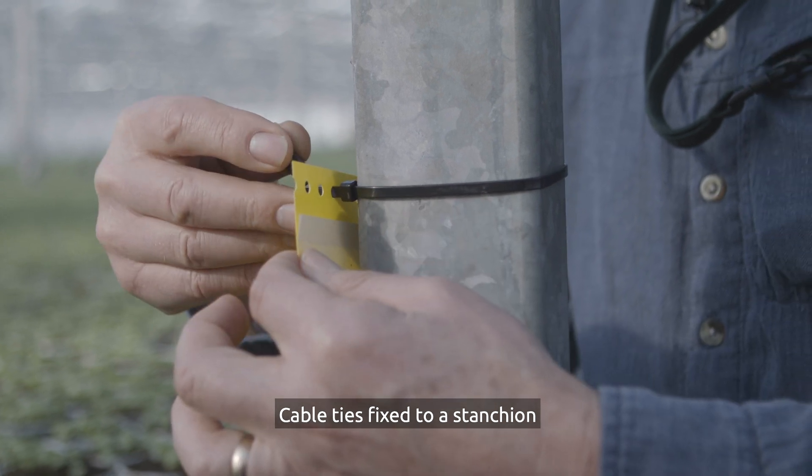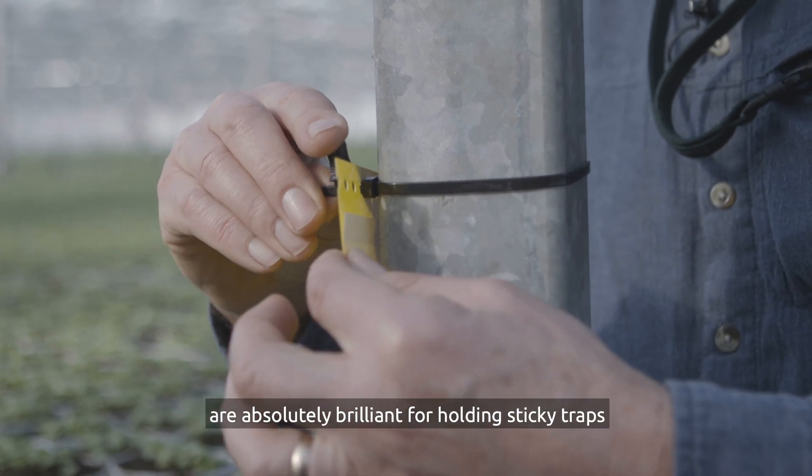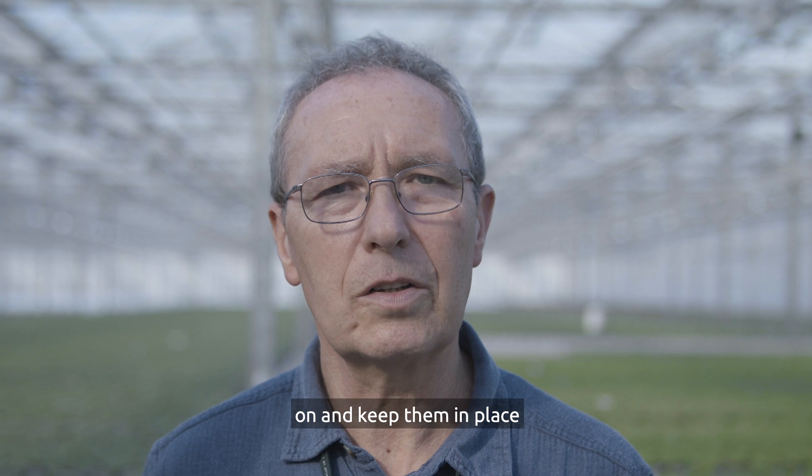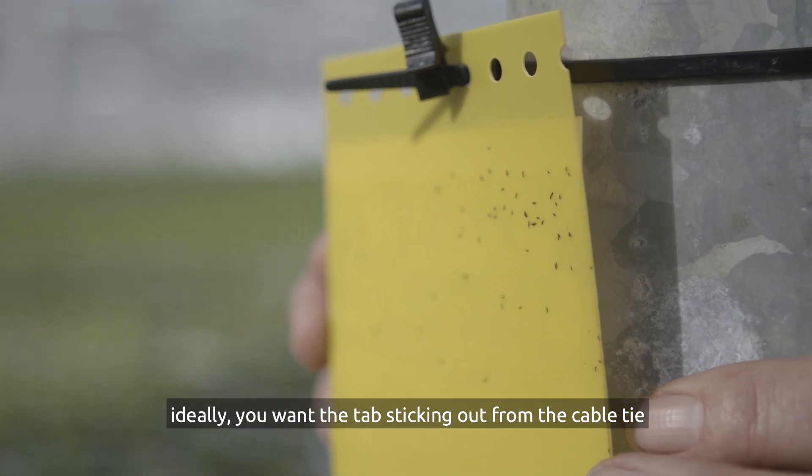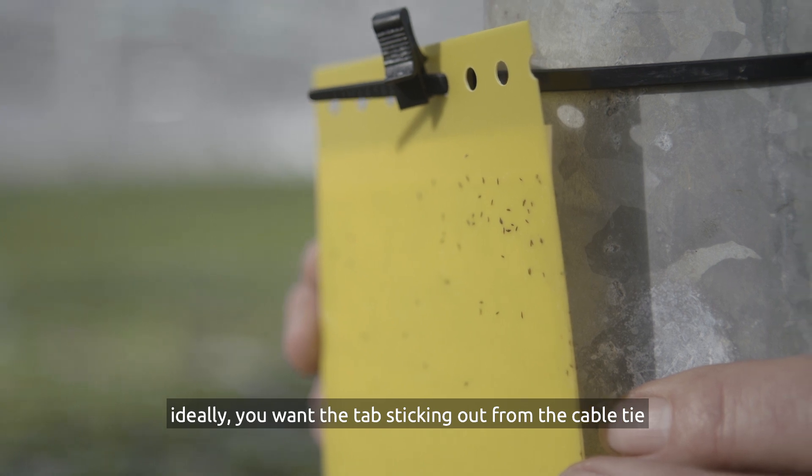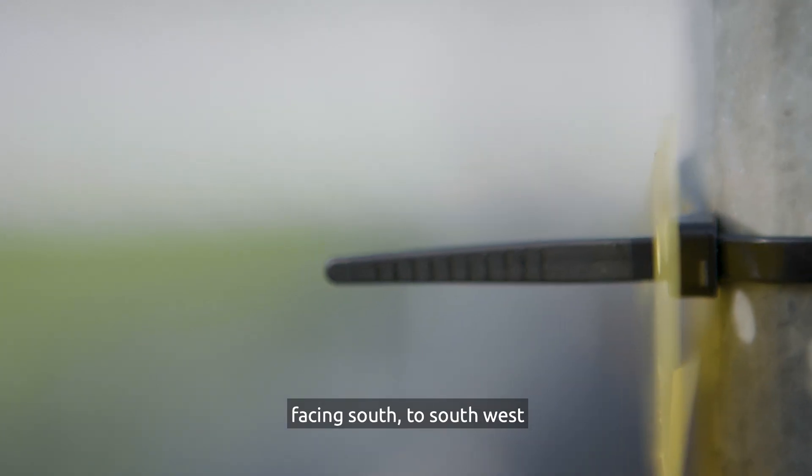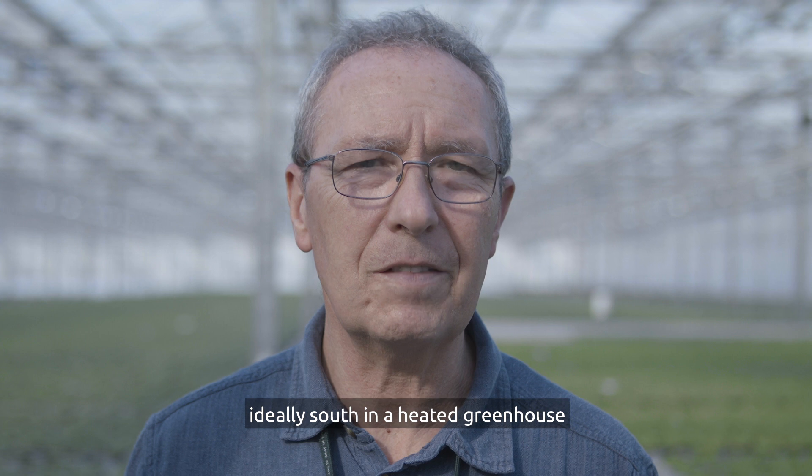Cable ties fixed to a stanchion are absolutely brilliant for holding sticky traps in place. Ideally, you want the tab sticking out of the cable tie facing south to southwest, ideally south in a heated greenhouse.